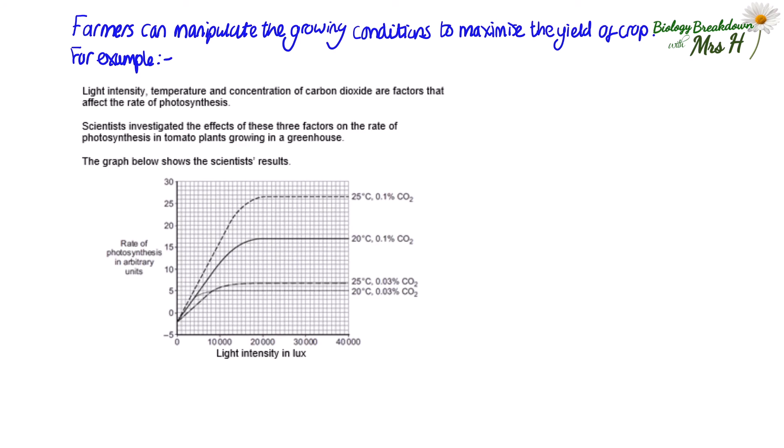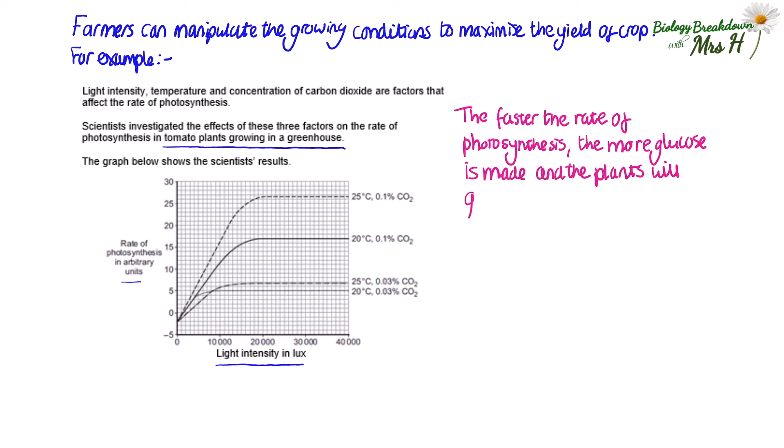Farmers can manipulate the growing conditions to maximize the yield of their crop. Let's look at an example question here. Light intensity, temperature and concentration of carbon dioxide are factors that affect the rate of photosynthesis. Scientists investigated the effects of these three factors on the rate of photosynthesis in tomato plants growing in a greenhouse. The graph shows the results. Now remember, the faster the rate of photosynthesis, the more glucose is made and the plants will grow bigger. In this case, you'll get bigger tomatoes.